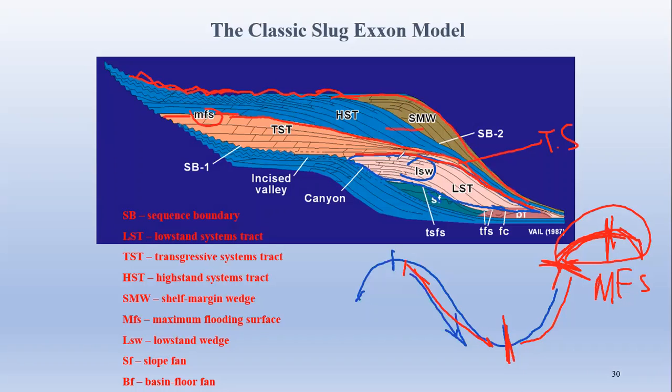Generally, the shelf margin wedge is also termed as part of the high stand system track. Above the high stand system track, due to sea level fall, there will be either a type 1 sequence boundary or a type 2 sequence boundary.